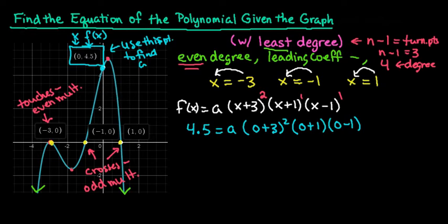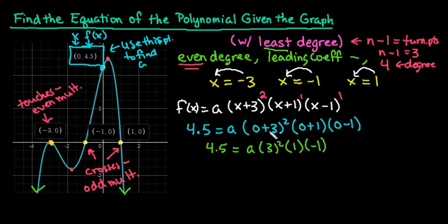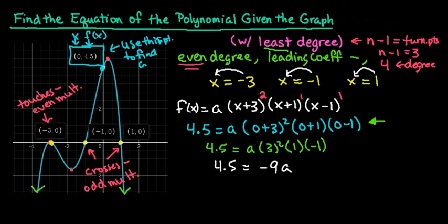Simplifying, we get 4.5 equals a times 3 squared times 1 times negative 1. Then 3 squared gives 9, times 1 is 9, times negative 1 gives negative 9. So we have 4.5 equals negative 9a, and dividing both sides by negative 9 gives us a equals negative one half.